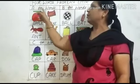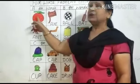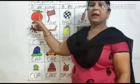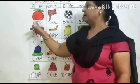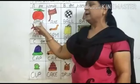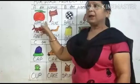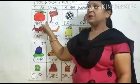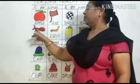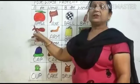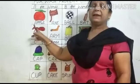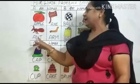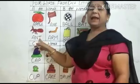A for words. What is this? This is an apple. A-P-P-L-E. Apple.